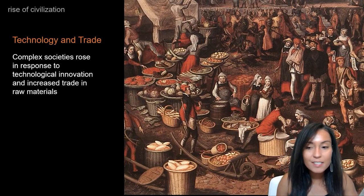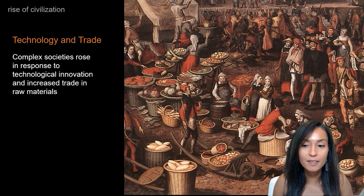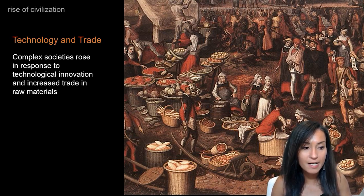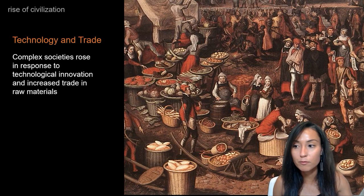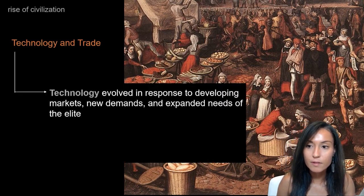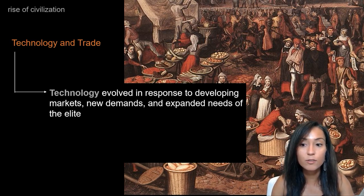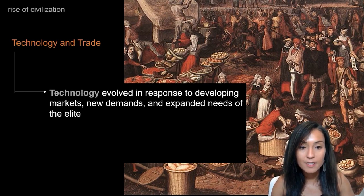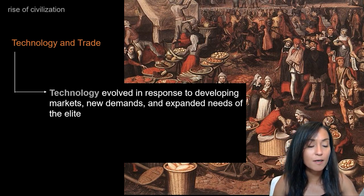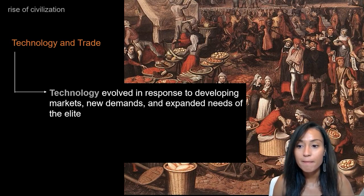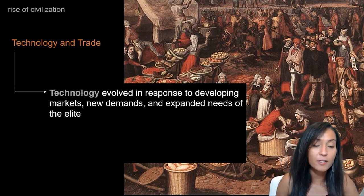In addition to ecological theories for the development of civilization, technology and trade are viewed as playing an important role. The argument here is that the origins of complex society were linked to technological innovation and an increase in trade in raw materials — things like obsidian, which is a black type of stone used to produce stone tools, copper, as well as other luxury goods.